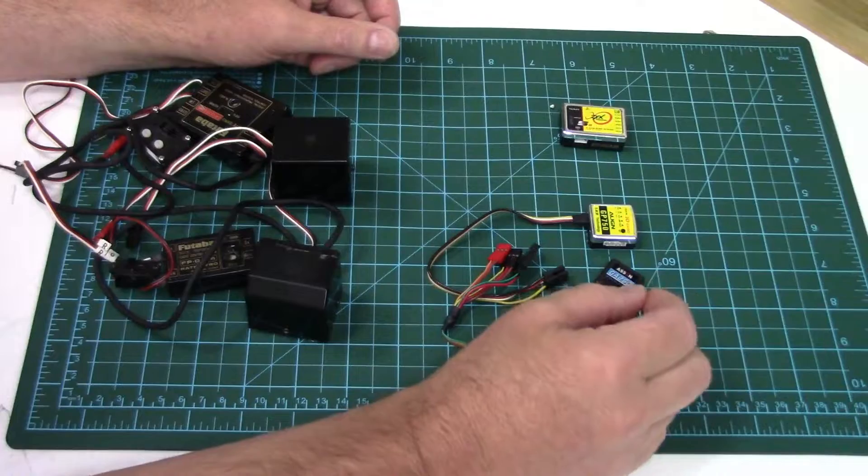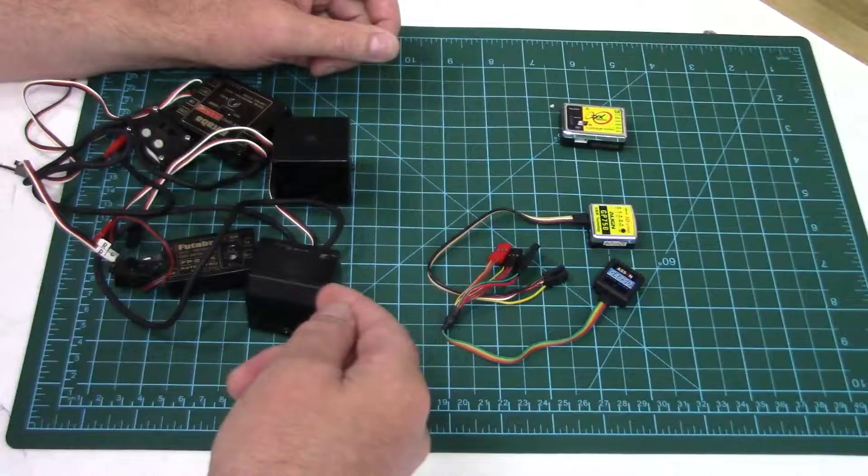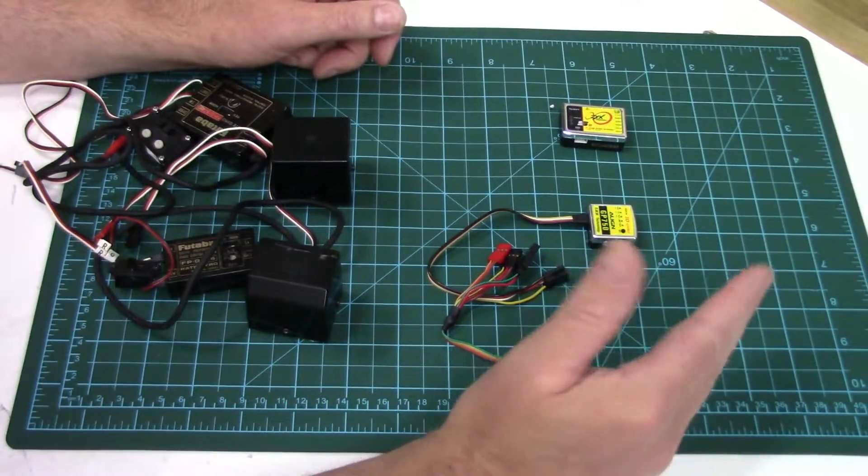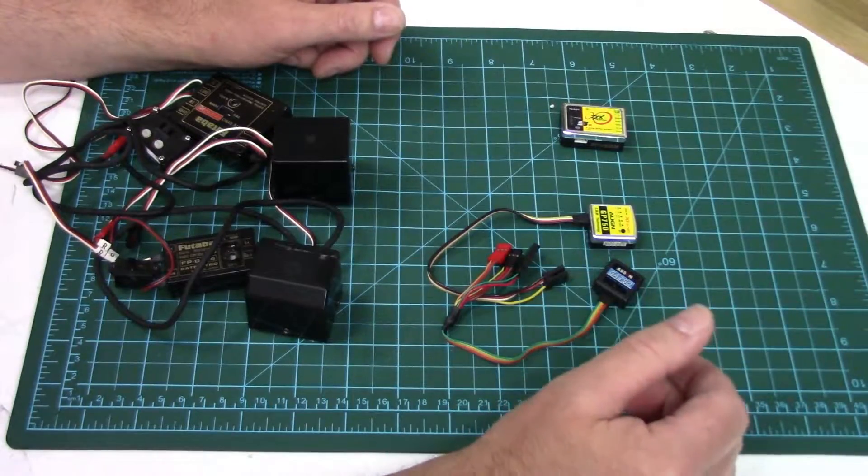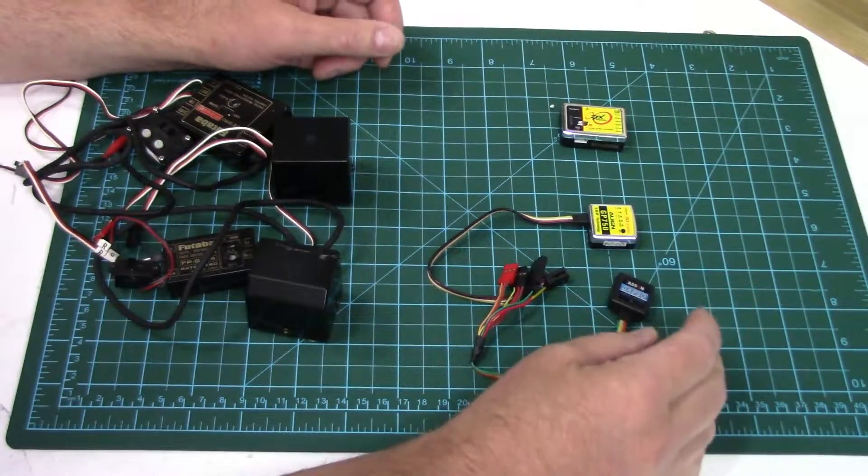The same way a spinning mass resists change to movement, a vibrating mass will also resist change to movement. And as these move and as that resistance is encountered it can be detected and that's how the gyro sensors in these little guys work.